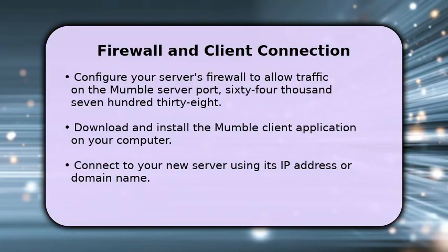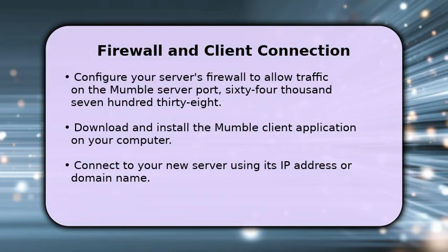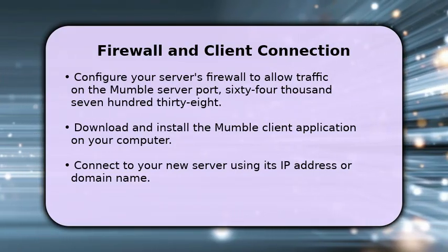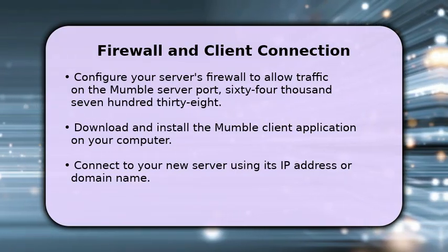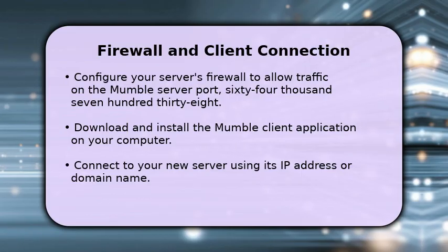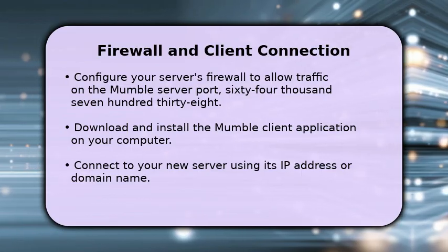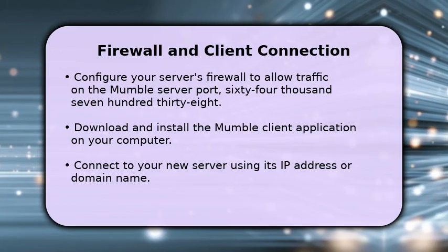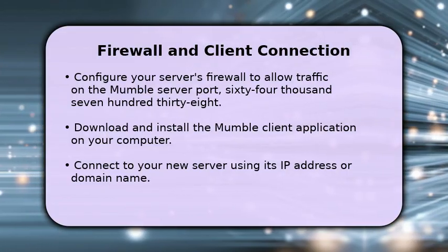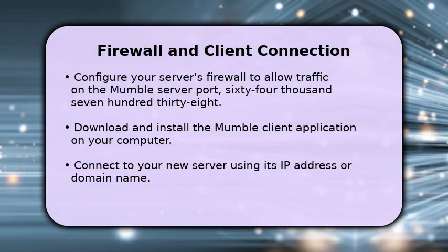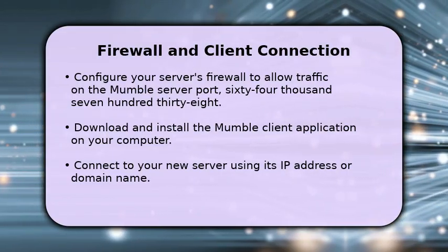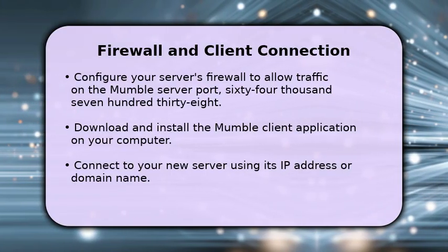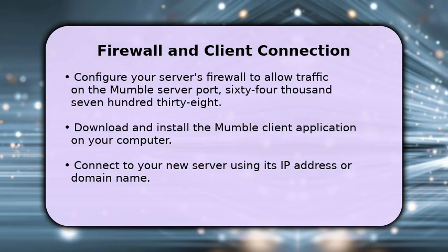Finally, let's make your server accessible. You must configure your server's firewall to permit incoming traffic on the default Mumble server port, which is 64,738. Next, download and install the Mumble client application on your computer. Once installed, you can easily connect to your brand new server using its IP address or domain name.